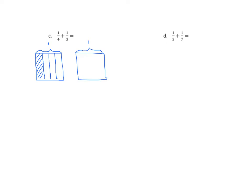For the next one, we're going to use horizontal lines — you'll see why in a minute. I'm going to change colors here just so we have a little contrast. Since it is thirds, we're going to use two horizontal lines to partition it into three equal parts and shade one of those three. I'm going to label these as one-fourth and one-third.